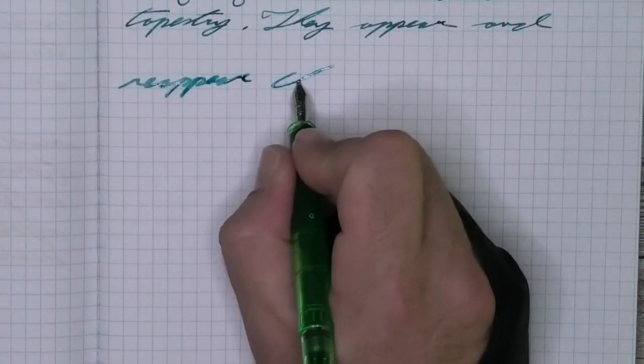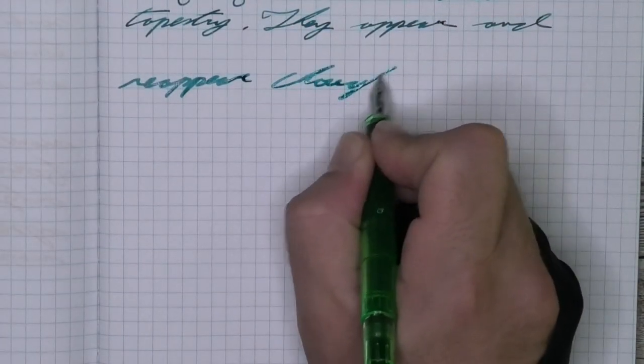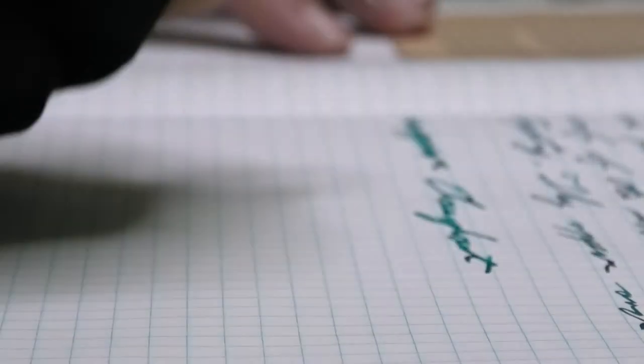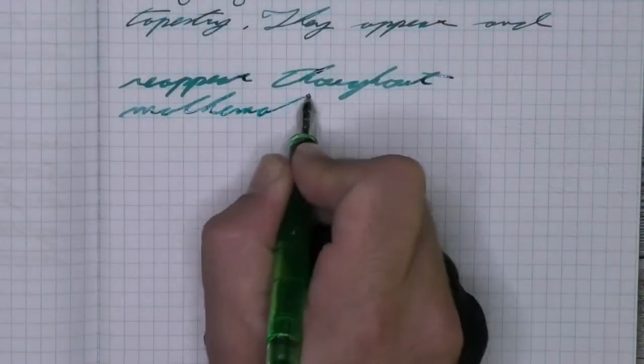The double broad is, as it has been, much lighter than we're getting with the medium or the extra fine. It has no shading, no feathering, no spread. Really, really good performance on this paper.